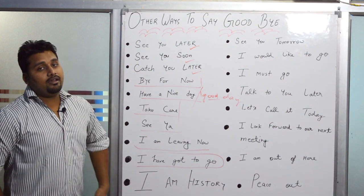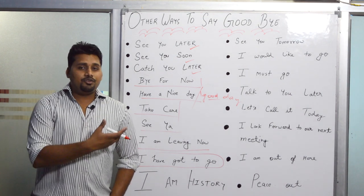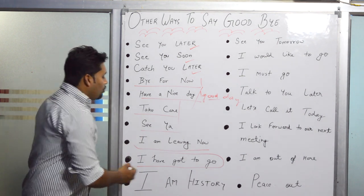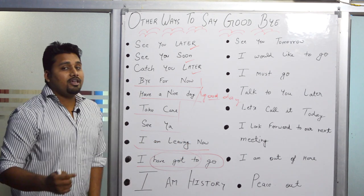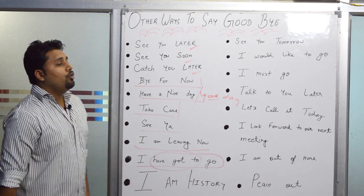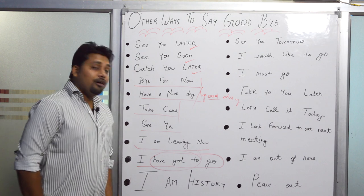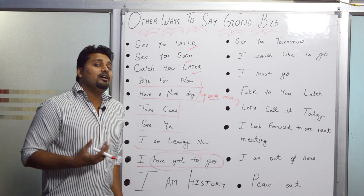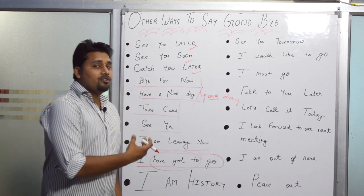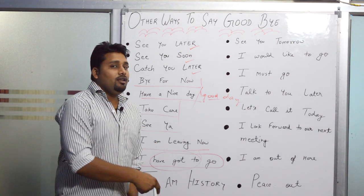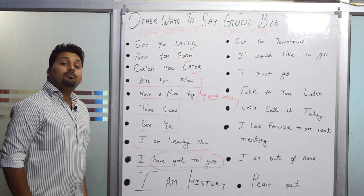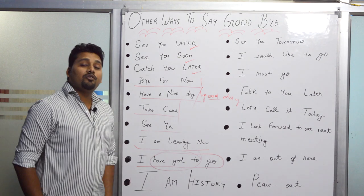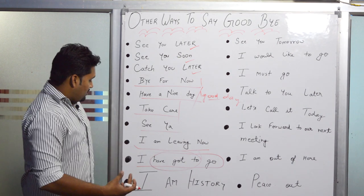Next, similarly, you can say 'I've got to go.' This means you don't want to go but you have to — perhaps you have a meeting or some other obligation. In short form you can say 'I gotta go.' There is a separate lesson about short forms available in the description link if you want to learn more.